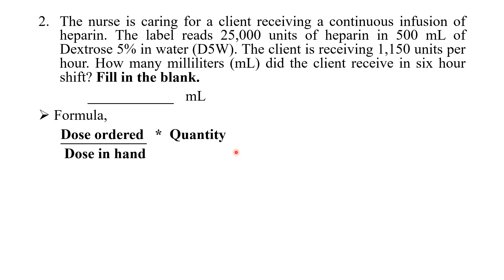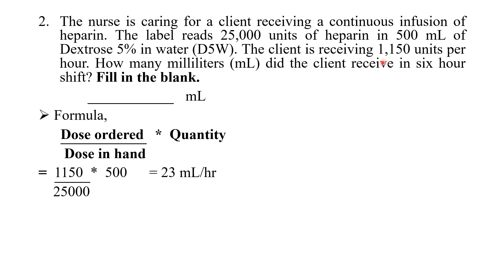We use the formula: dose ordered divided by dose in hand, multiplied by quantity. The dose ordered is 1,150 units per hour (what the client is receiving). The dose in hand is 25,000 units, and the volume is 500 mL. Calculating this gives 23 mL per hour.